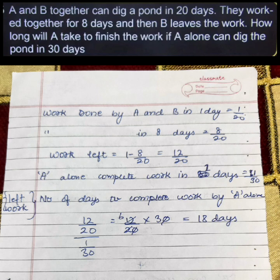So, the work done by A and B in one day would be 1 upon 20. Hence, the work done by both of them in 8 days would be 8 upon 20. The work left after the 8 days would be 1 minus 8 upon 20, that would be 12 upon 20.